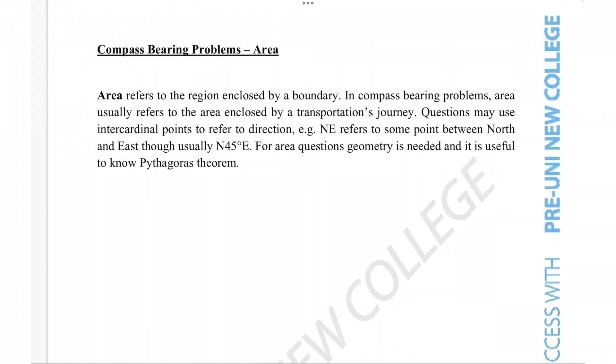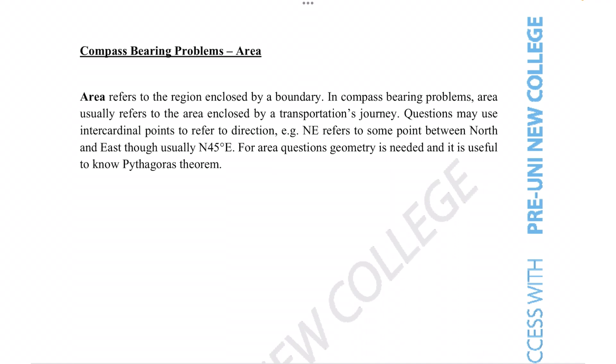So to begin, let's start off by reading a short description of what you can expect in area related compass bearing questions. Area refers to the region enclosed by a boundary. In compass bearing problems, area usually refers to the area enclosed by a transportation journey. Questions may use intercardinal points to refer to direction. For example, NE refers to some point between north and east, though usually it is 45 degrees. For area questions, geometry is needed and it is useful to know Pythagoras' theorem.